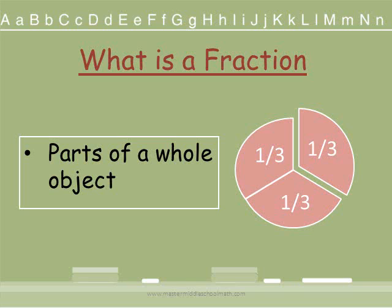The top number is the numerator and that's how many pieces you have of the whole object. So if it's divided into thirds and you have 1 piece, it would be 1 third. If you have 2 pieces, 2 thirds, so on and so forth.